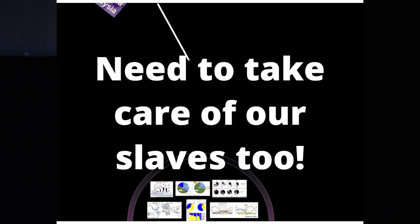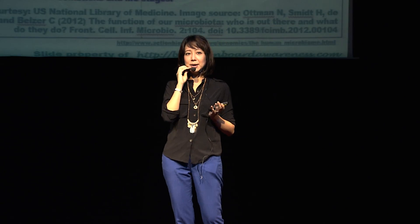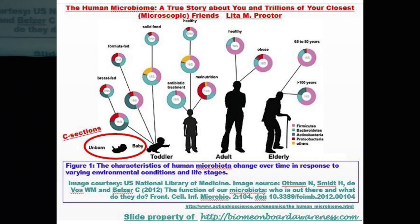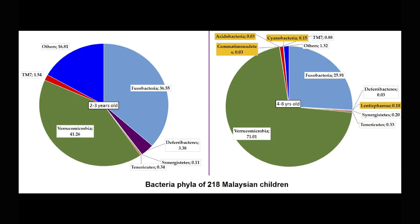There is also a need to take care of the slaves throughout our life. From the moment we are born to the moment we die, throughout the aging process, we actually see a shift in microbiota — a shift in our slaves. Our slaves finally leave us before we leave them. In one study, we gathered two to six-year-old children — over 500 of them — but we only managed to get samples from over 200 of them.